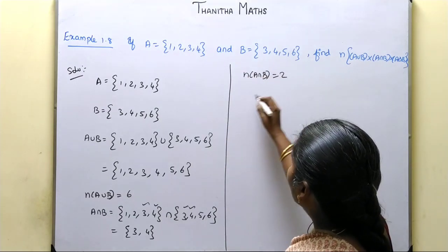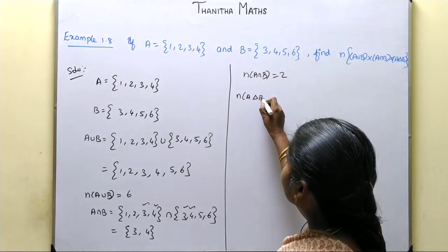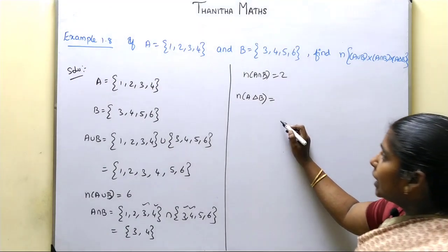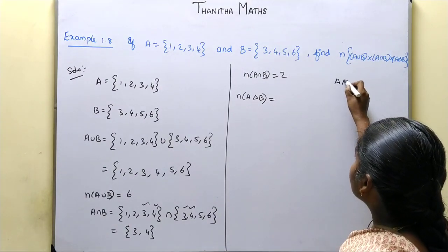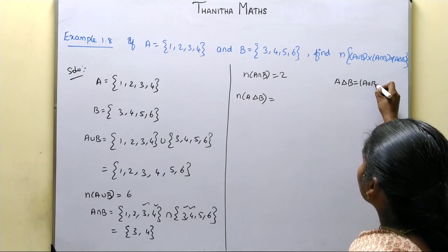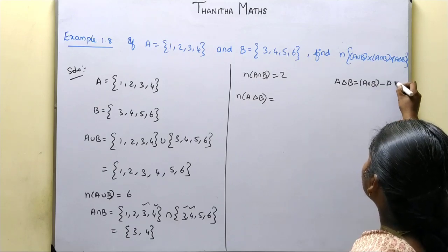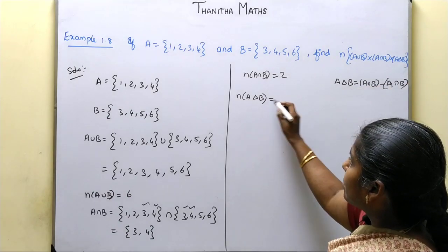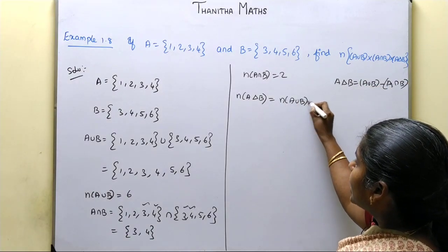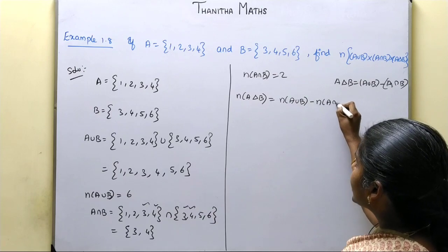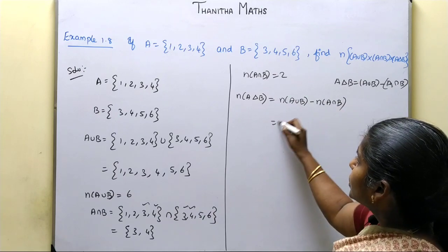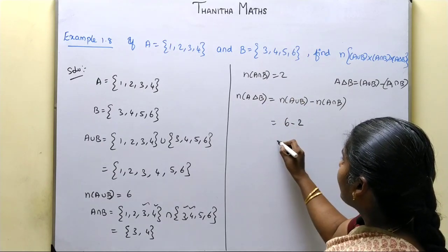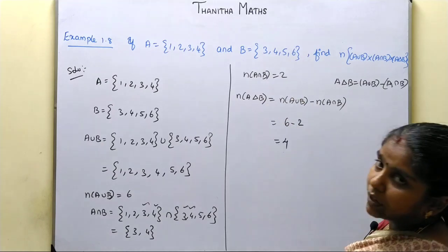Now we have to find n(A△B). A△B can be written as (A∪B) - (A∩B). So n(A△B) = n(A∪B) - n(A∩B) = 6 - 2 = 4. The value of n(A△B) is 4.